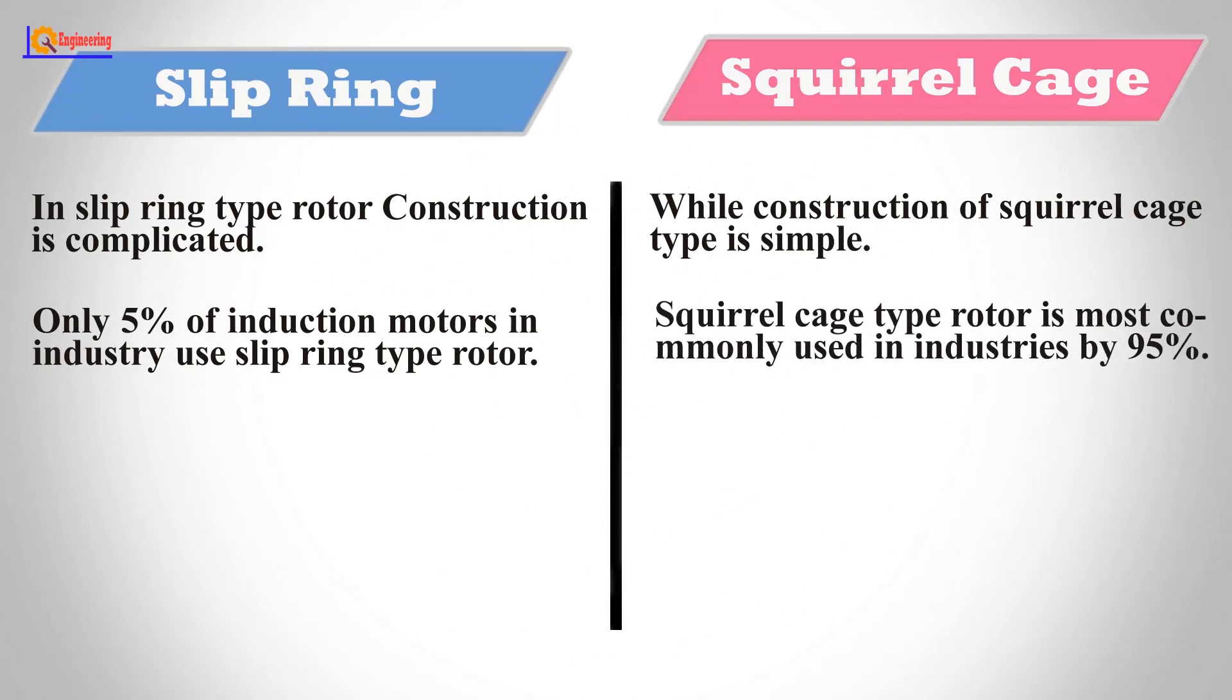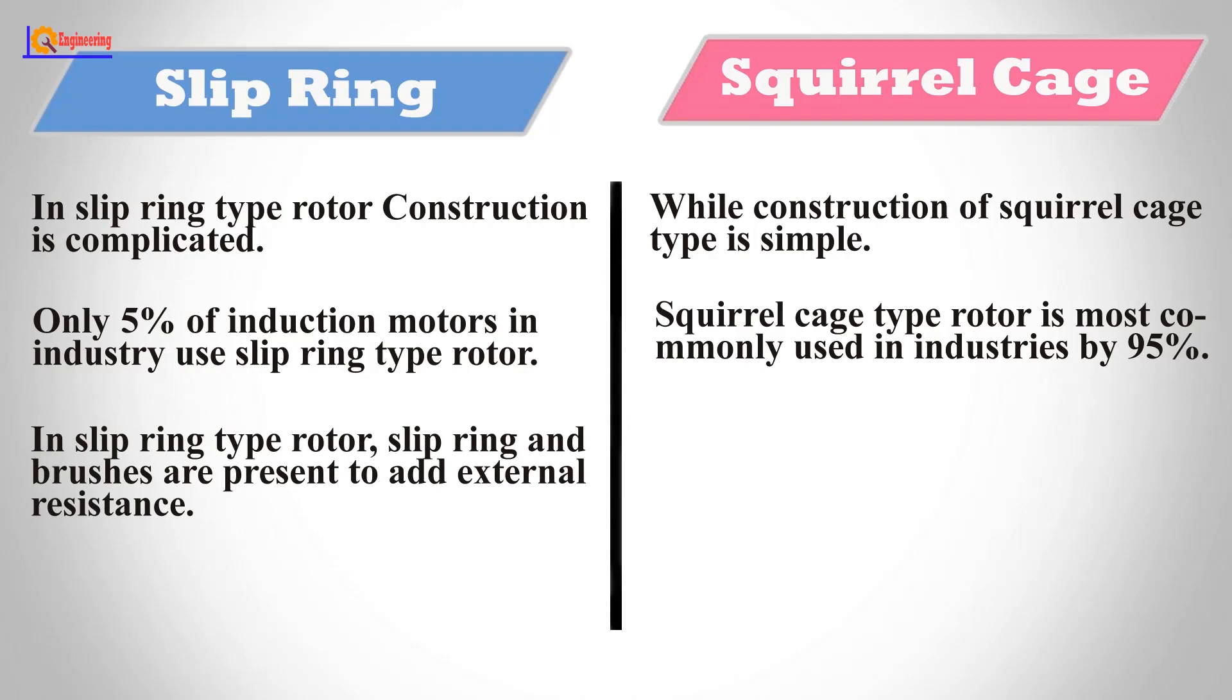Squirrel cage type rotor is the most commonly used in industries by 95%. In slip ring type rotor, slip rings and brushes are present to add external resistance. While in squirrel cage type rotor, slip rings and brushes are absent.